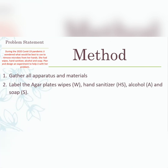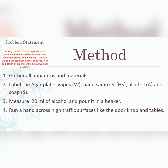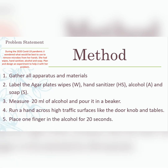Now for the steps — written in present command tense. First, gather all apparatus and materials. Label the agar plates: wipes (W), hand sanitizer (HS), alcohol (A), and soap (S). Measure 20 mL of alcohol and pour it into a beaker. Then rub your hand across a high-traffic surface like a doorknob or table, because you want to expose yourself to surfaces where a high volume of people have been.